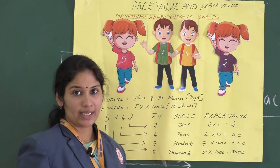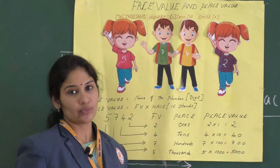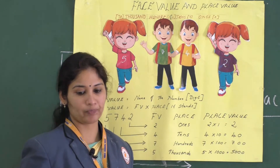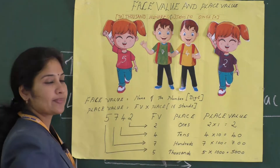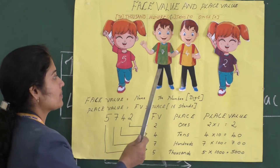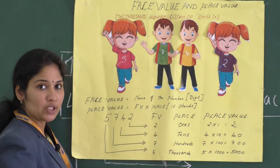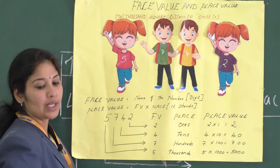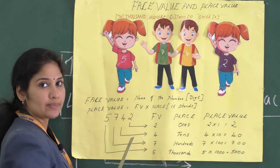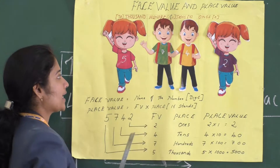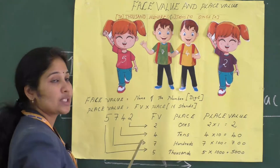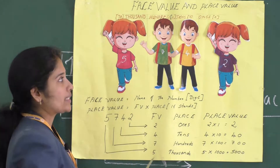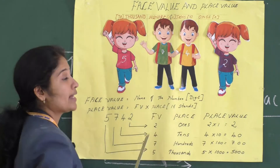We will study face value and place value of a four-digit number. Let's illustrate using an example. There are four friends, each standing in their respective places. The first digit is 5, standing at the thousands place. The second digit is 7, standing at the hundreds place. The third digit is 4, standing at the tens place.